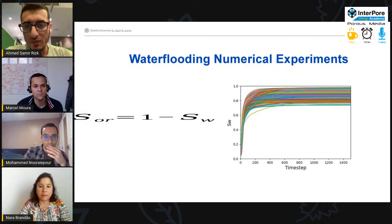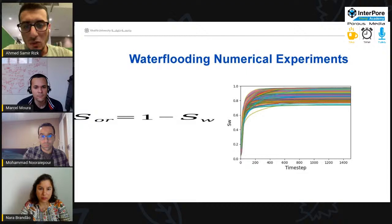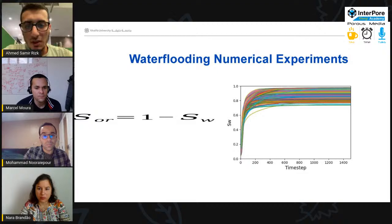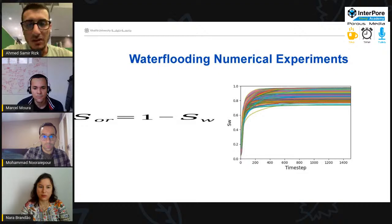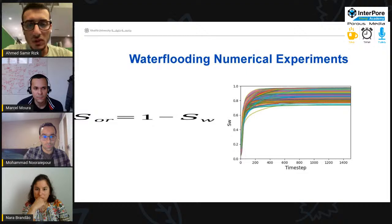Here we can see how the experiments are done. First, we start with a small value of SW. Then with injecting water into the sample, this SW or the saturation of water increases in the sample until it reaches a steady state where with more injection of water, there is no change in the saturation of the water. At this point, we define our SOR and we take this as a value which we need.